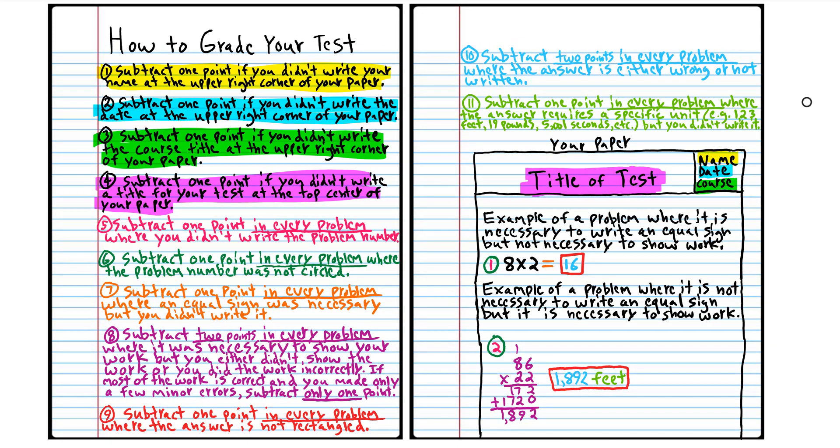In the pink it says subtract one point in every problem where you didn't write the problem number. You've got to write the problem number. And then in the green it says subtract one point in every problem where the problem was not circled. You've got to circle your problem numbers. The orange says you've got to write an equal sign and subtract a point if you didn't write the equal sign.